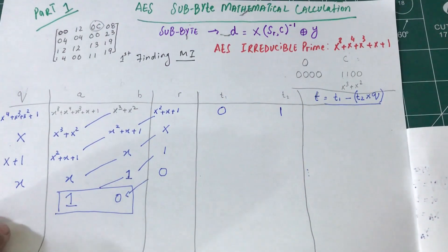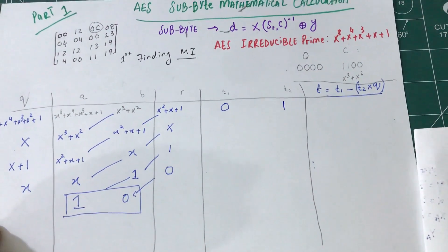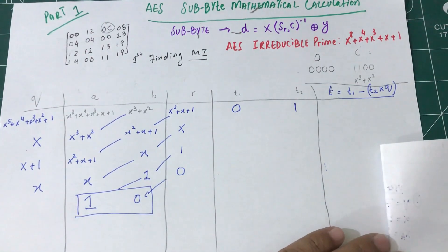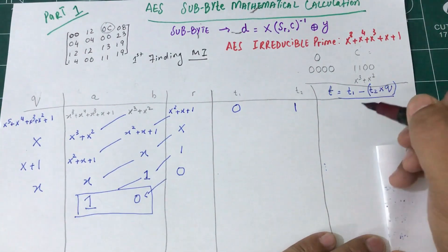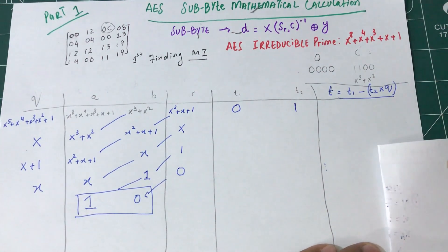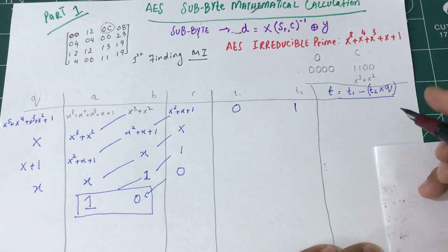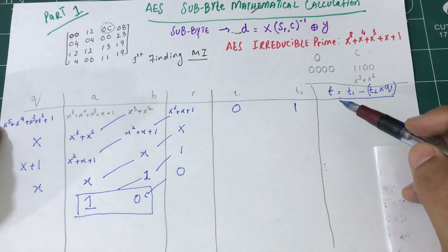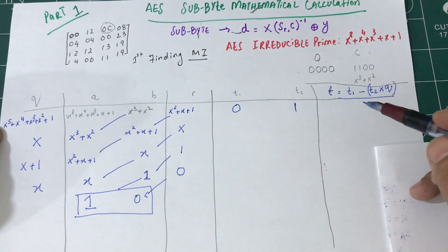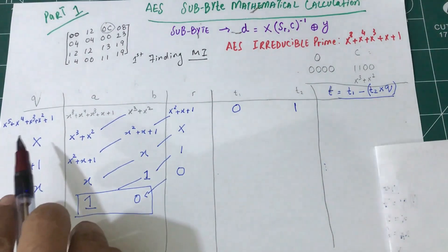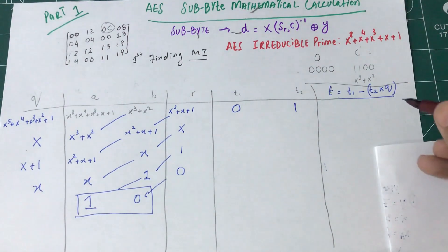This is the tricky part where you have to use your brain. Let's try to find what is the value of t that I need to use. What is t2 multiplied by q? q is x raised to 5 plus x raised to 4 plus x raised to 3 plus x raised to 2 plus 1.